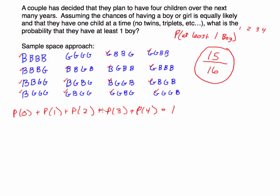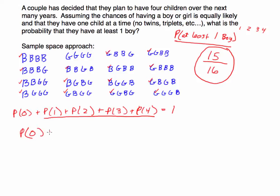Since these are mutually exclusive, adding them all up gives one with no overlap. When asked to find 'at least one boy,' you're looking for the sum of the probabilities of having one, two, three, or four boys. I'm going to replace that whole sum with 'the probability of at least one.' So we have: the probability of having no boys plus the probability of having at least one is certain — equal to one.